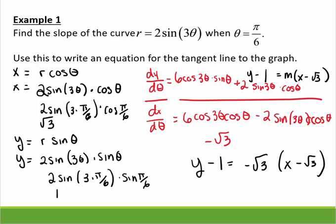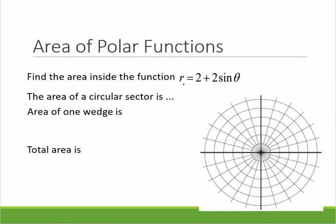Okay. Areas of polar functions. So we need to find the area inside this curve. So let's graph that curve real quick. It is oriented up and down. When I plug in 0, I get 2. When I plug in π/2, I get 4. 2, 3, 4, I get 2, and I plug in π, and I get 0.